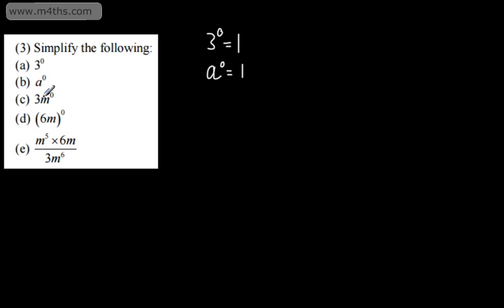This one here is slightly different. We've got 3 lots of M to the 0. So the 3 isn't raised to the 0. So what this is saying is 3 times by M to the 0. So we've got 3 times by 1, which of course is 3.